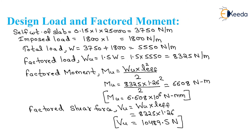Moving toward the next step: design load and factored moment calculation. First, we calculate self-weight of slab equals 0.15 into 1 into 25,000 N per meter cube, giving 3750 N per meter. Then imposed load equals 1800 N per meter. Total load W equals 3750 plus 1800, giving 5550 N per meter.